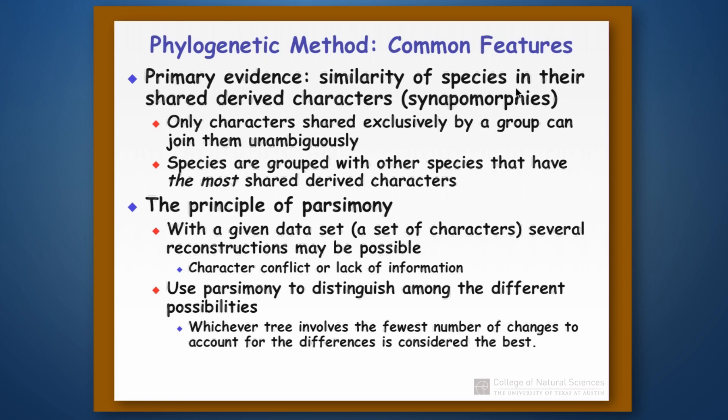And the reason that we have to do that and why we have to apply parsimony is that with a given data set, sometimes it may be possible to do multiple reconstructions where we get something called character conflict.